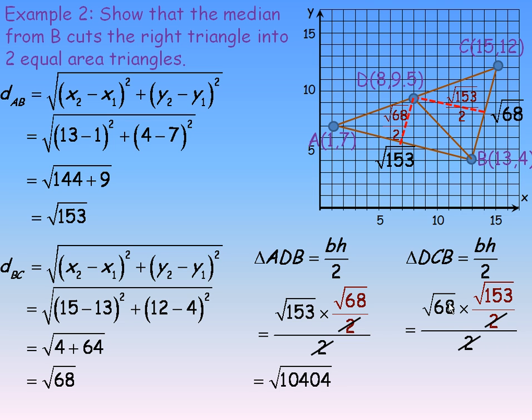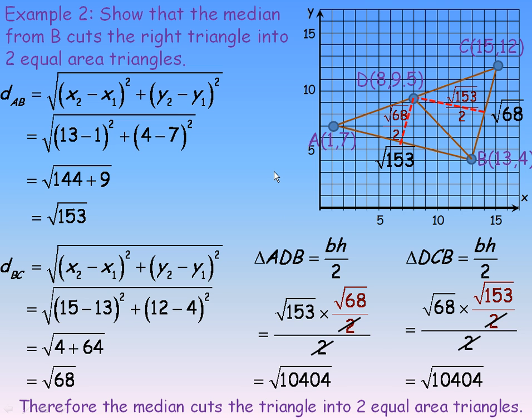And so, notice we're multiplying the same numbers underneath the square root. 68 and 153, 68 and 153, so we still get the root of 10,404. So, those two areas are exactly the same. And so, a concluding statement. Therefore, the median cuts the triangle into two equal area triangles. And that's the end of the lesson.